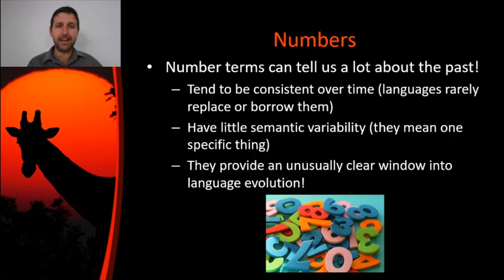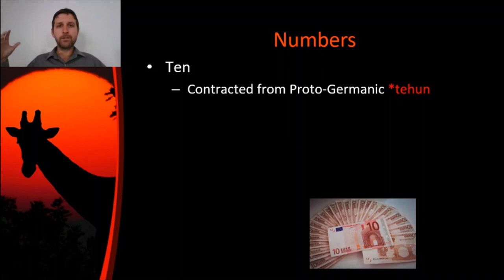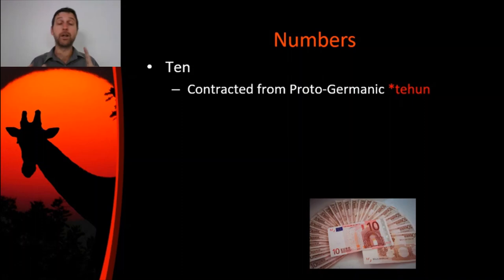Let's start with the number ten. The number ten comes from Proto-Germanic — this is not a French borrowing. All of our number words are English native words that we got from the depths of our Germanic past. Proto-Germanic is the language from which all of the modern Germanic languages evolved: English, German, the Scandinavian languages minus Finnish, Icelandic, Danish, Dutch, and some other dialects. These are the Germanic languages — they comprise a language family.